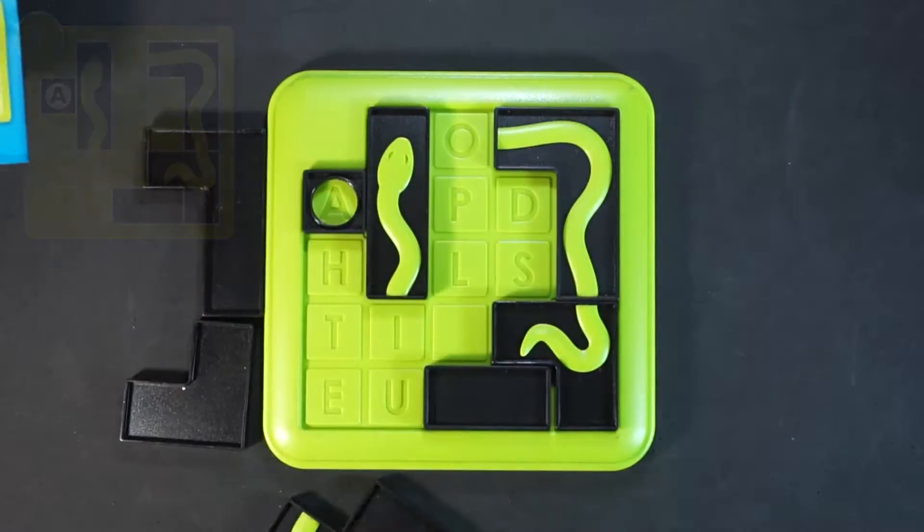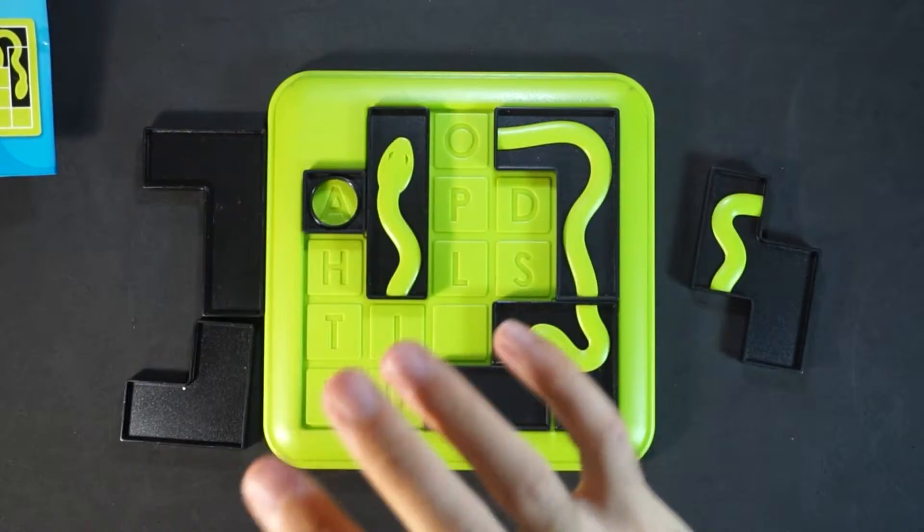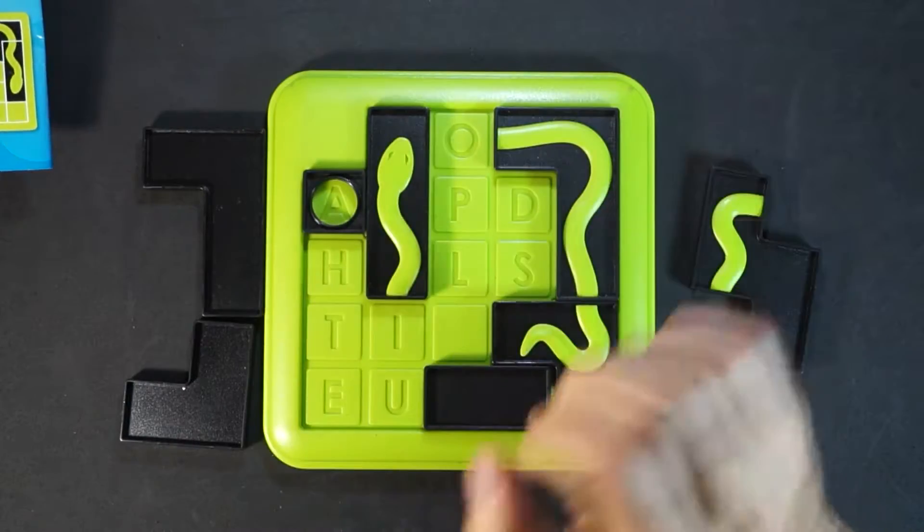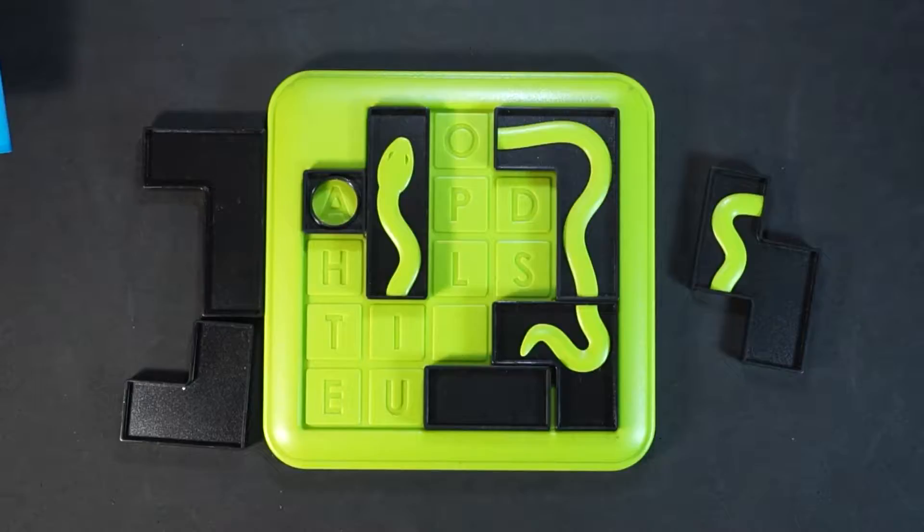With the remaining pieces you have to fill in all the empty spaces and at the same time create a full-bodied Anaconda from head to tail. Its size does not matter.